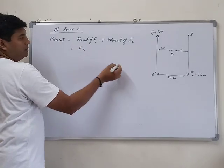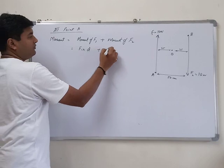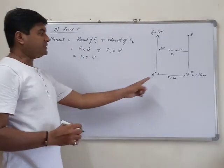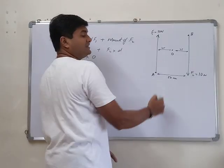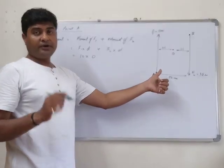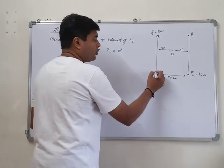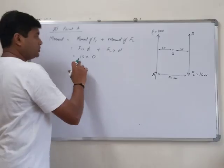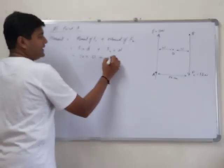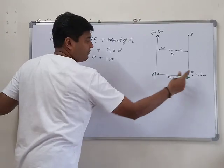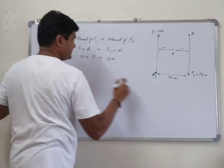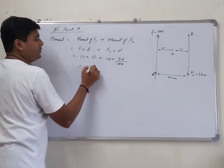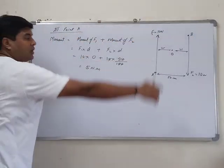Moment of F1 is F1 into distance d, plus F2 into d. F1 is 10 but d is 0, because point A and the line of action of force are at the same point — so applying force at the pivoted point produces no movement, giving zero. The second term is 10 into 50 centimeters, which is 500 over 100, giving 5 newton meter clockwise.